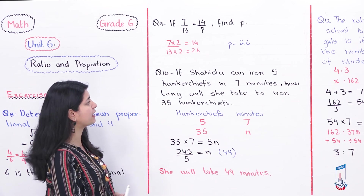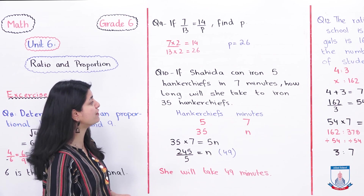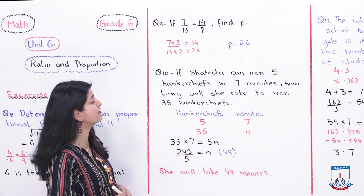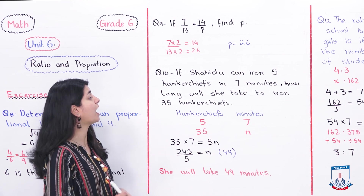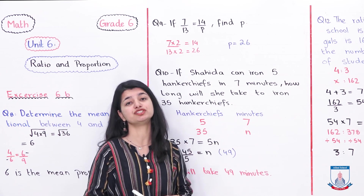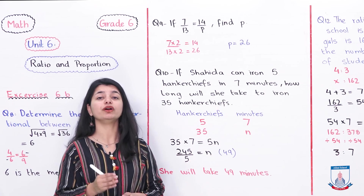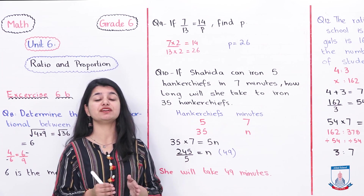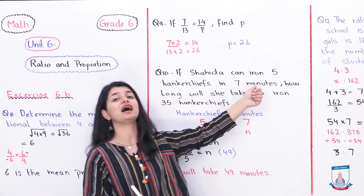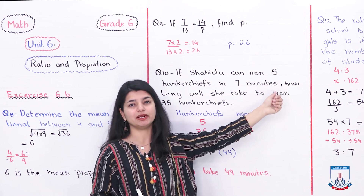Question number 10: if Shahidah can iron 5 handkerchiefs in 7 minutes, how long will she take to iron 35 handkerchiefs? So Shahidah irons 5 handkerchiefs in 7 minutes.